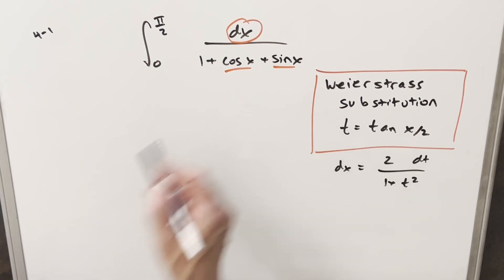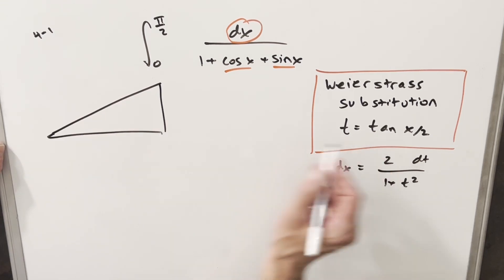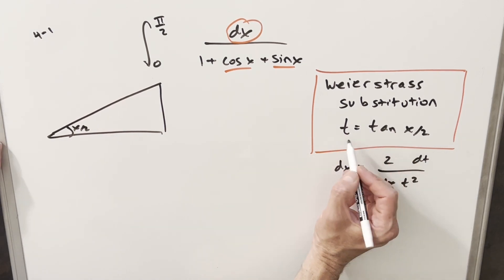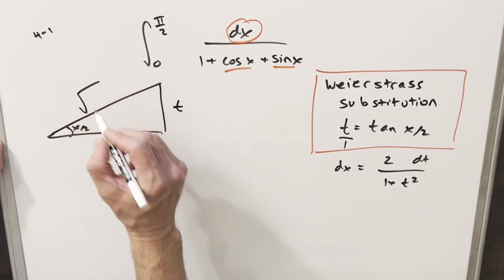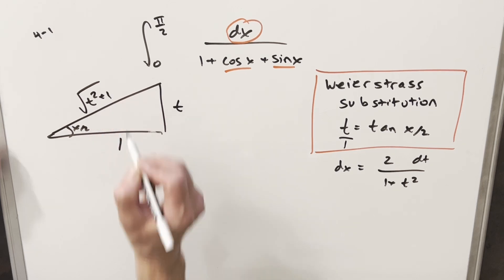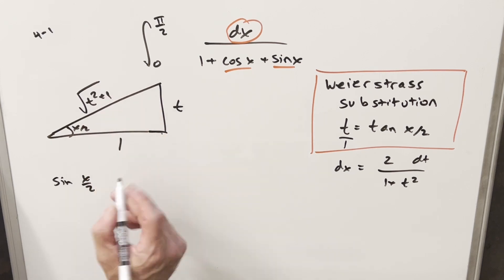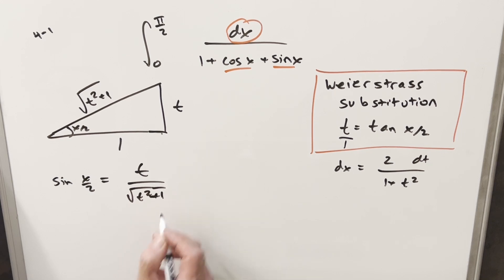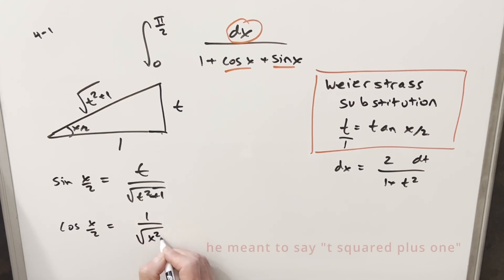To get values for sine and cosine, I'm going to draw a right triangle where the angle is x/2. Since tan(x/2) equals t, we write t over one — opposite over adjacent — so the hypotenuse is square root of t squared plus one. Then sine of x/2 is t over square root of t squared plus one, and cosine of x/2 is one over square root of t squared plus one.